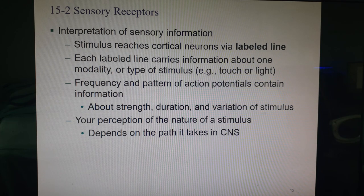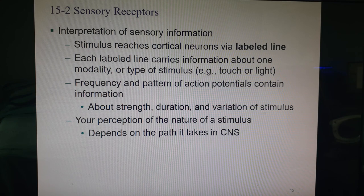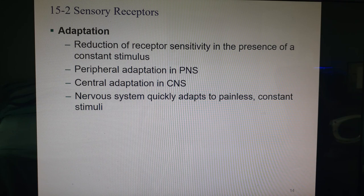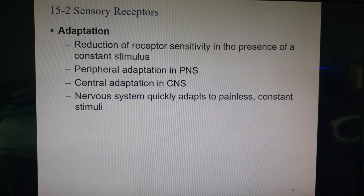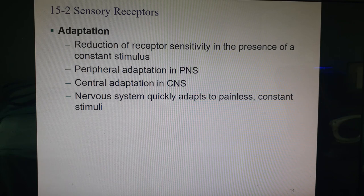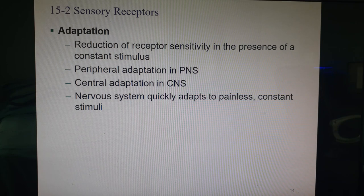The brain interprets the frequency and pattern of action potentials to determine how strong and long a stimulus is, and whether it's changing. Your perception of a stimulus depends on which path it takes to your brain. We also have adaptation: for stimuli that are constant, we don't want to overwhelm the nervous system. We have peripheral adaptation at the receptor level and central adaptation in the CNS — the thalamus also filters signals.